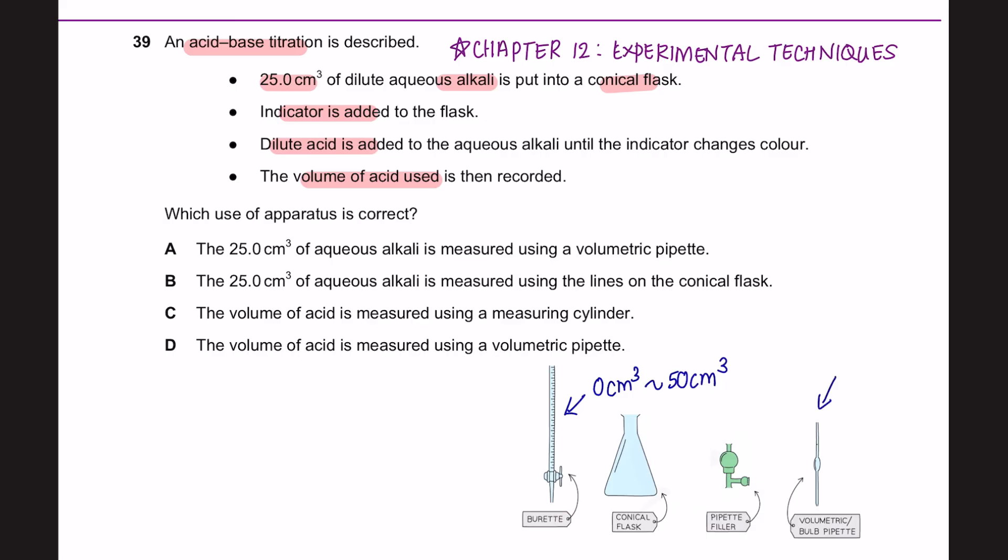And volumetric pipettes are the most accurate way of measuring a fixed volume of liquid between 10 cm³ to 25 cm³. So we've got 25 cm³ of alkali here. And we are indeed going to measure it by using a volumetric pipette. So the answer here is A.